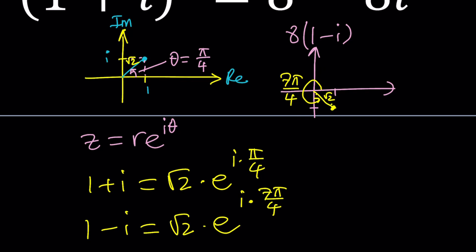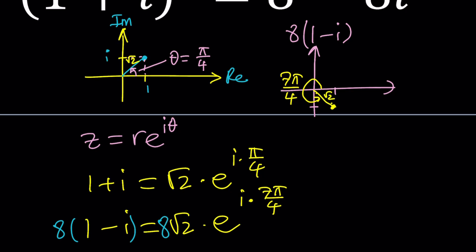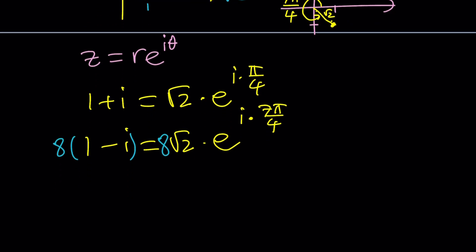But wait a minute, I have 8 times that. No worries, multiply both sides by 8, and you'll be good to go. It's that easy because 8 is just going to be part of r.